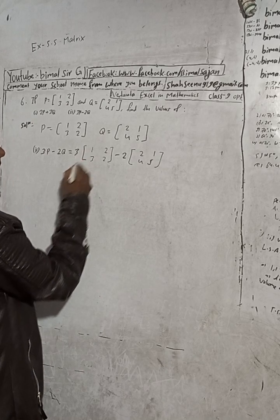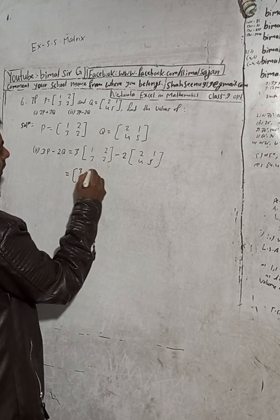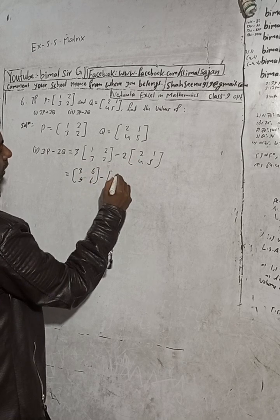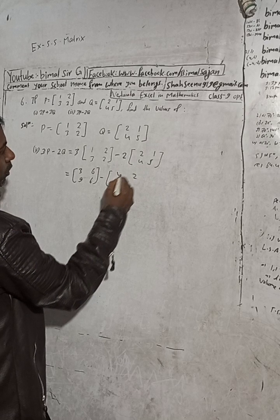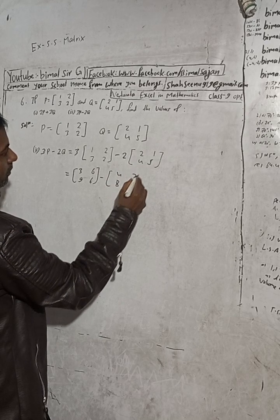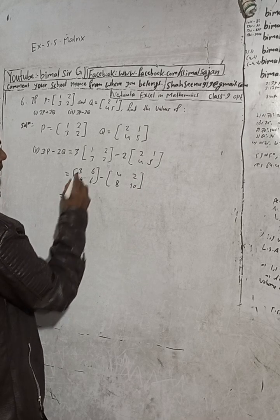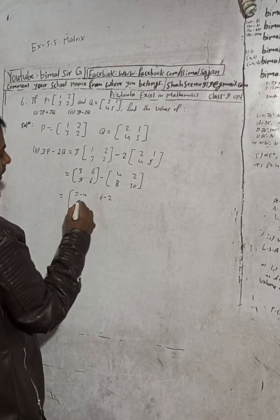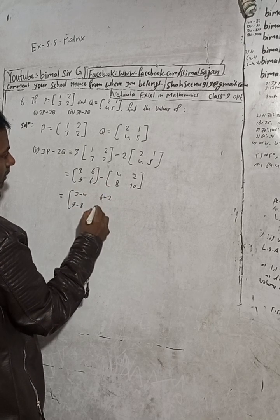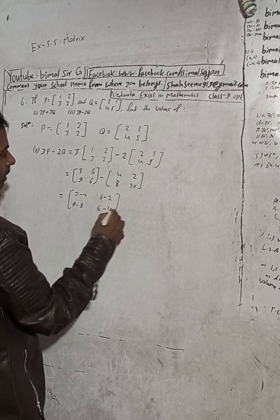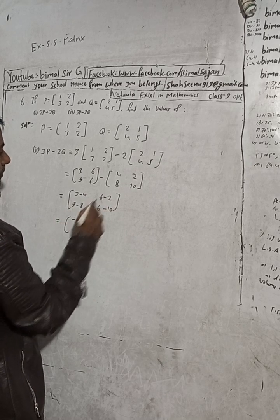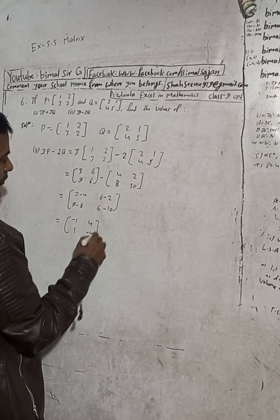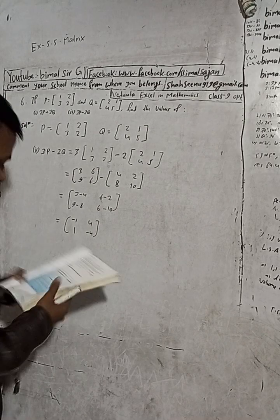Now multiply inside: 3×1=3, 3×2=6, 3×3=9, 3×2=6. Minus: 2×2=4, 2×1=2, 2×4=8, 2×5=10. So: 3−4=−1, 6−2=4, 9−8=1, 6−10=−4. This is the required answer. Let me check the answer in the book.